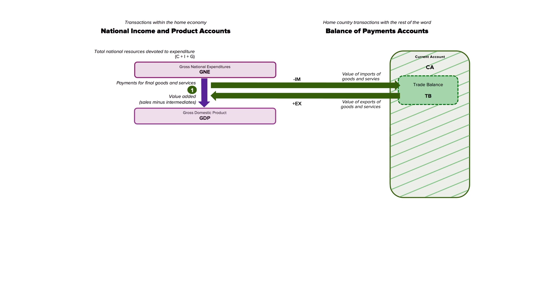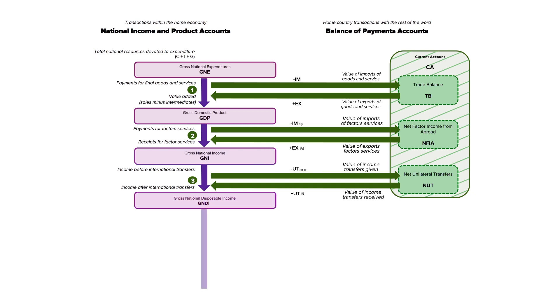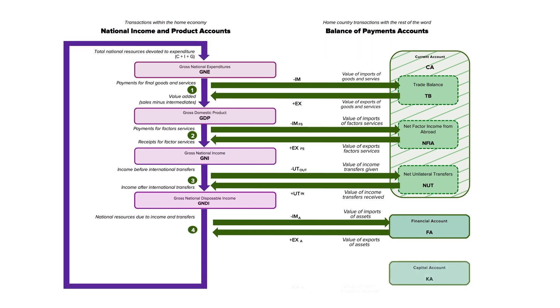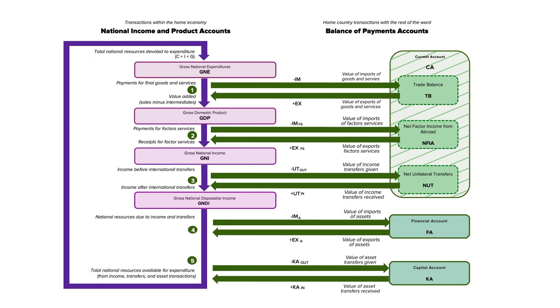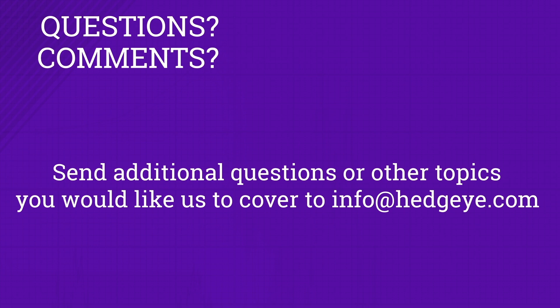So that completes our flow. You start with gross national expenditure, add in the trade balance, add in net factor income from abroad, add in net unilateral transfers, and if you're consuming more than your income, that's balanced by the capital account — representing the net flow of assets into the country — which takes you back around to your capacity to spend at the top with GNE. That doesn't get into all the granular idiosyncrasies, but I hope it answered more questions than it generated. If you do have any questions, feel free to send them into info@hedgeye.com. Thanks.